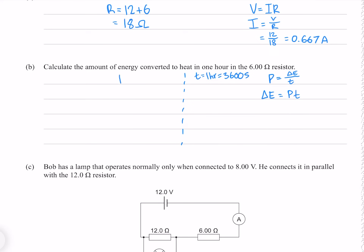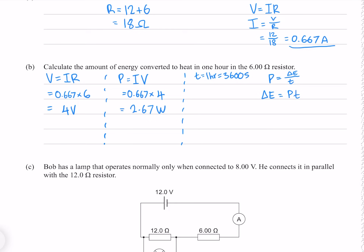To find our power we need to use P equals IV. We know the current through the resistor since we just found it, but we don't know the voltage. For that we need Ohm's law again: V equals IR. We know our current and our resistance of 6, which gives me 4 volts. Multiplying current by voltage gives a power of 2.67 watts. Now finally for our energy equation we have everything we need, and that gives me 9610 joules to three significant figures.